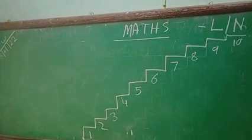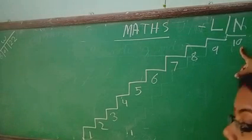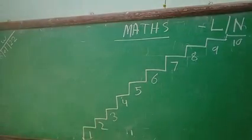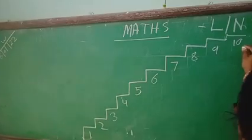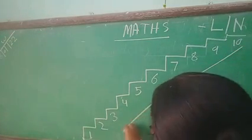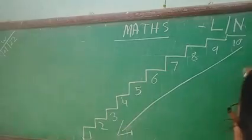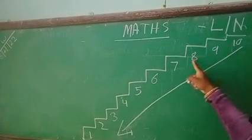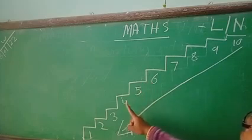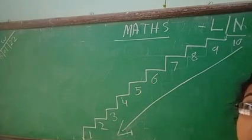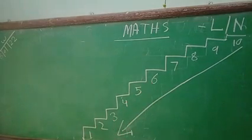Now you see I go up. Now I am going to count down. So what we will do? We will count the number from the back side: 10, 9, 8, 7, 6, 5, 4, 3, 2, 1. It is the backward counting.